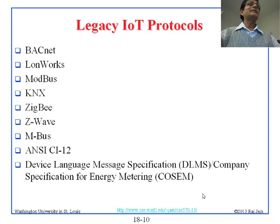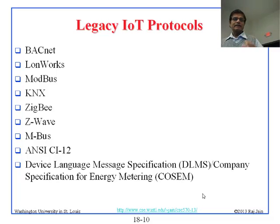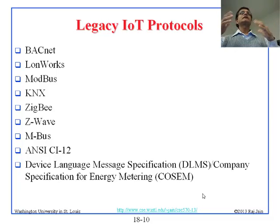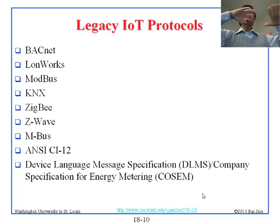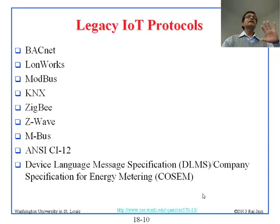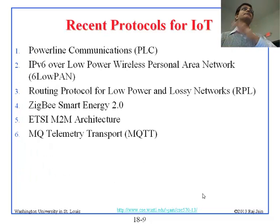There are things that didn't happen in the last five years that we will not talk about in this course: BACnet, LonWorks, Modbus, KNX, ZigBee, Z-Wave, M-Bus. These are currently used in different segments. For example, BACnet is used in the building segment — if you have controllers in a campus controlling heating systems, that would be BACnet today. All of this is going to be slowly, over a period of time, replaced by what is coming.